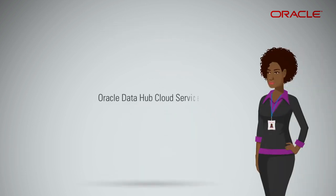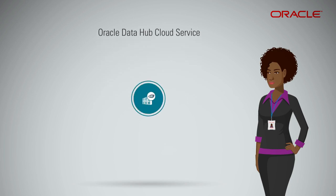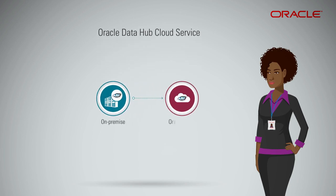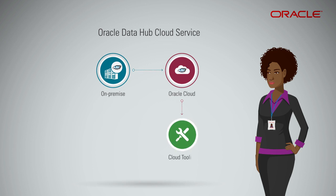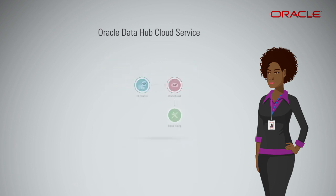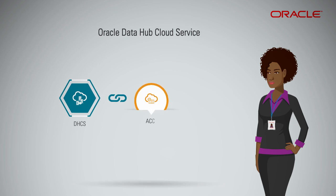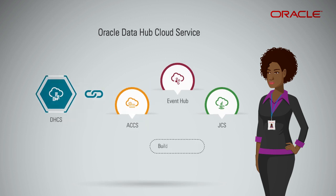By using managed Cassandra, enterprises can save time and effort in self-provisioning and administering Cassandra on IaaS. Oracle Data Hub Cloud Service offers easy migration from on-premise Apache Cassandra to Oracle Cloud, and the customer fully owns the Cassandra cluster and application data. Data Hub provides cloud tooling to manage Cassandra, with integration with Application Container Cloud Service (ACCS), Java Cloud Service (JCS), and Event Hub Data Hub Cloud Service.